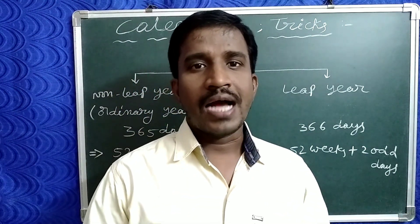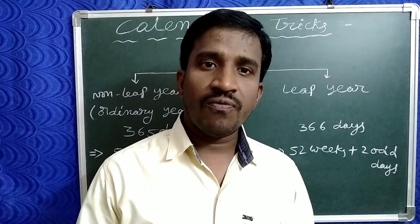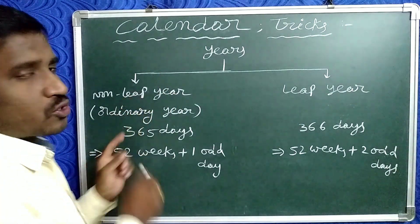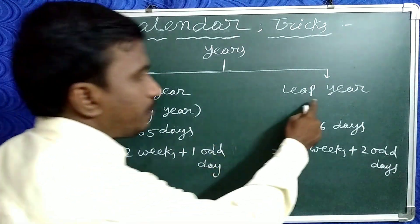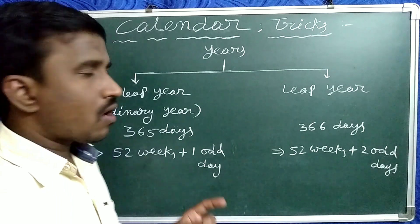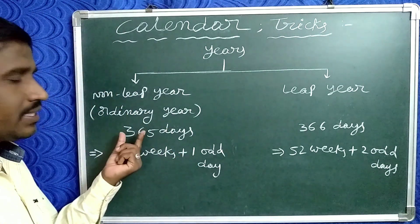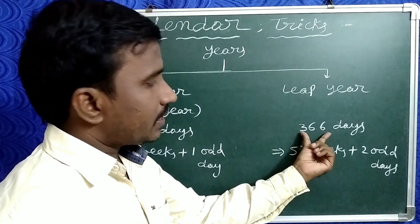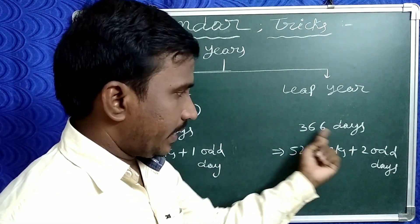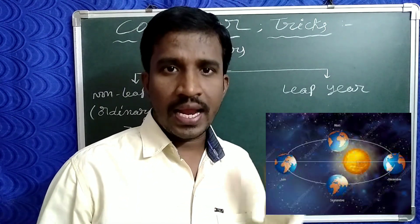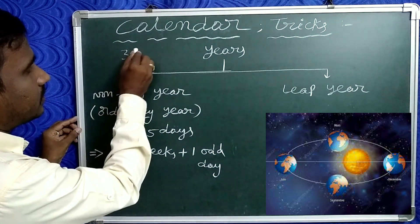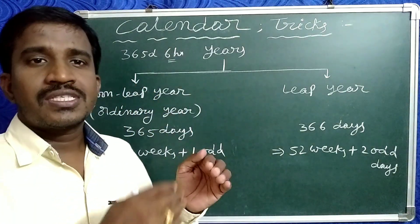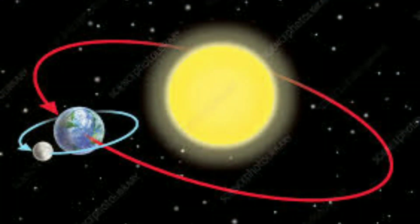Now let's go to calendar problems and tricks. There are two types: first one is leap year and second one is non-leap year or ordinary year. In general, a non-leap year has 365 days, but a leap year has 366 days. Why is one day added? Because the earth completes one revolution around the sun in 365 days and six hours.